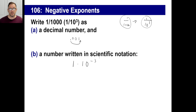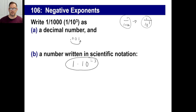So let's look at this whole thing. 1 one-thousandth, as a decimal, looks like 0.001, which is the same thing as 1 over 10 to the third power. Now this is interesting — 1 times 10 to the negative third power is the same thing as 1 over 10 to the positive third power.